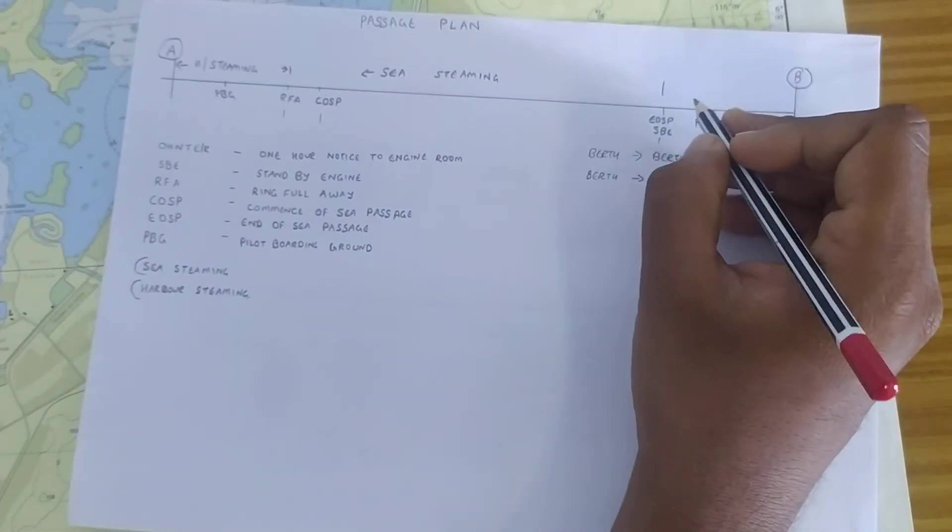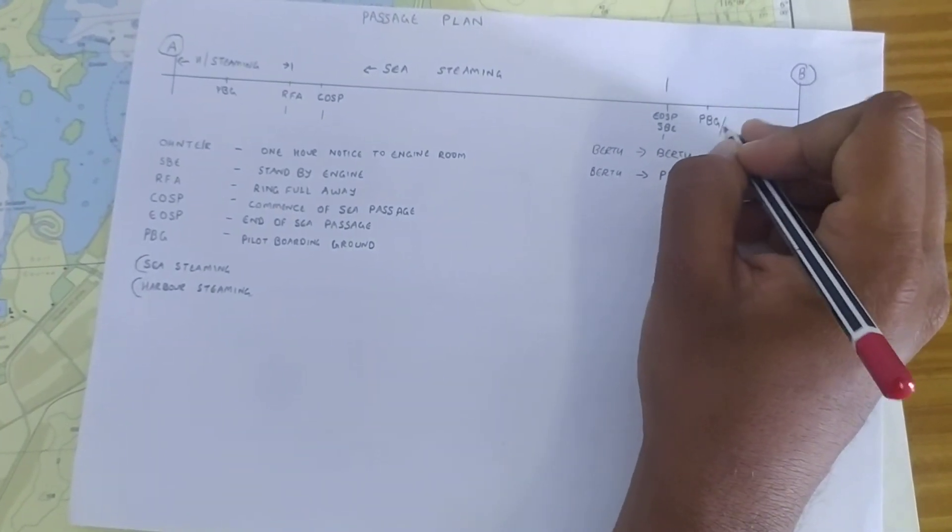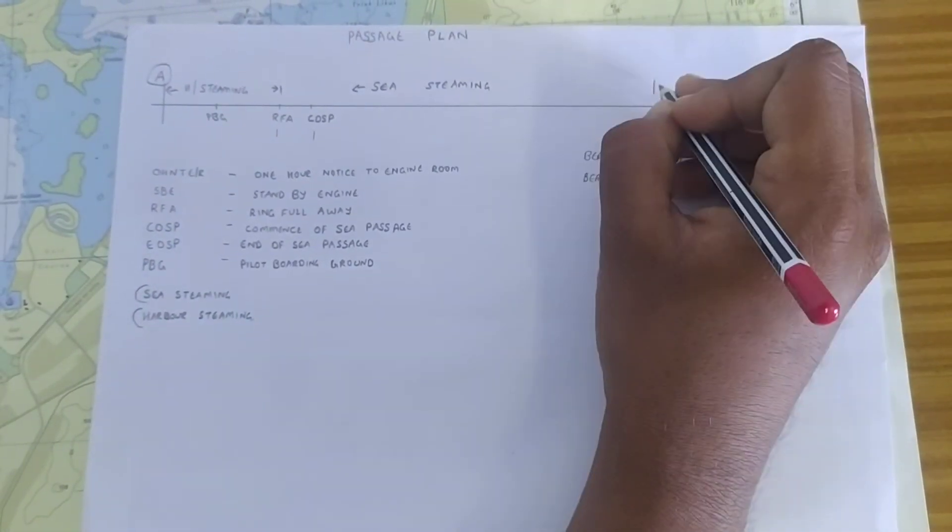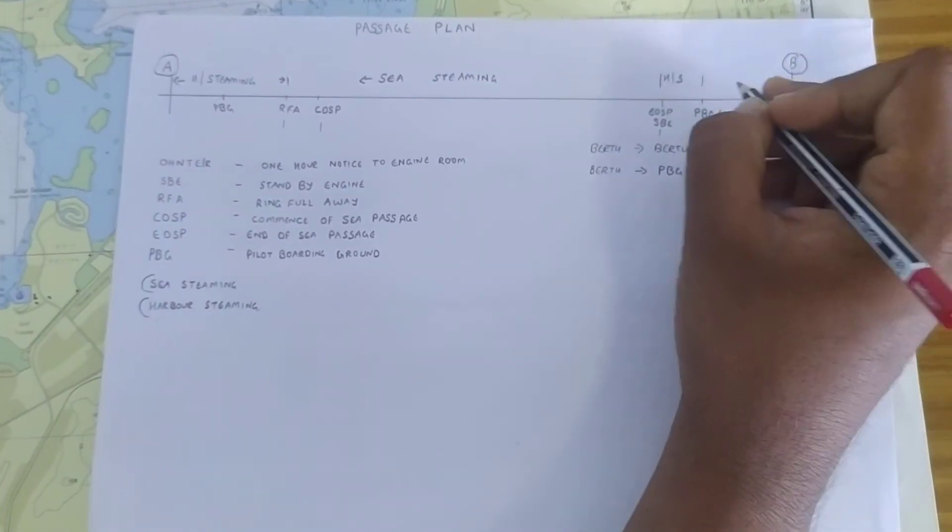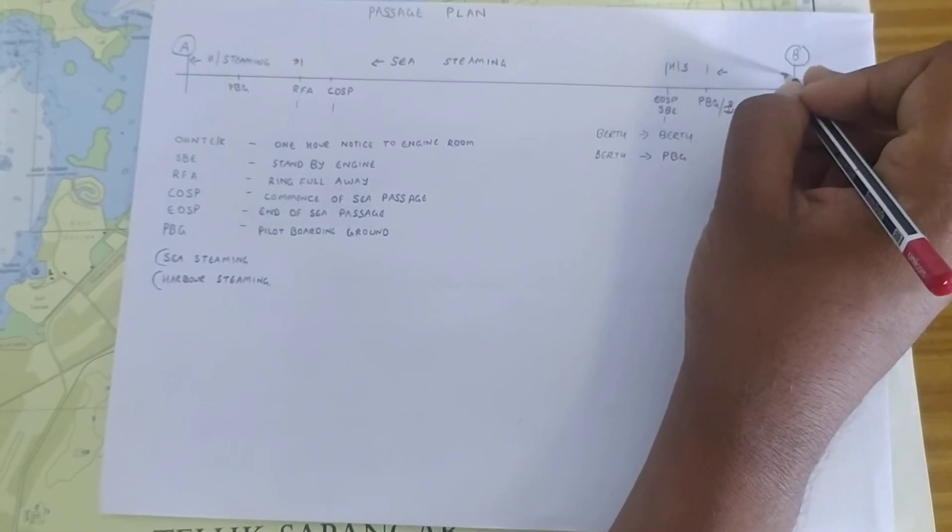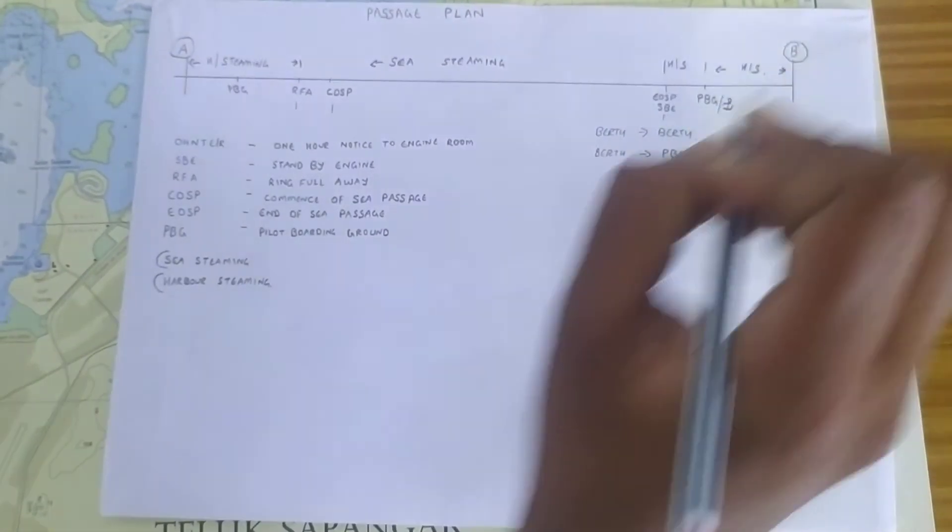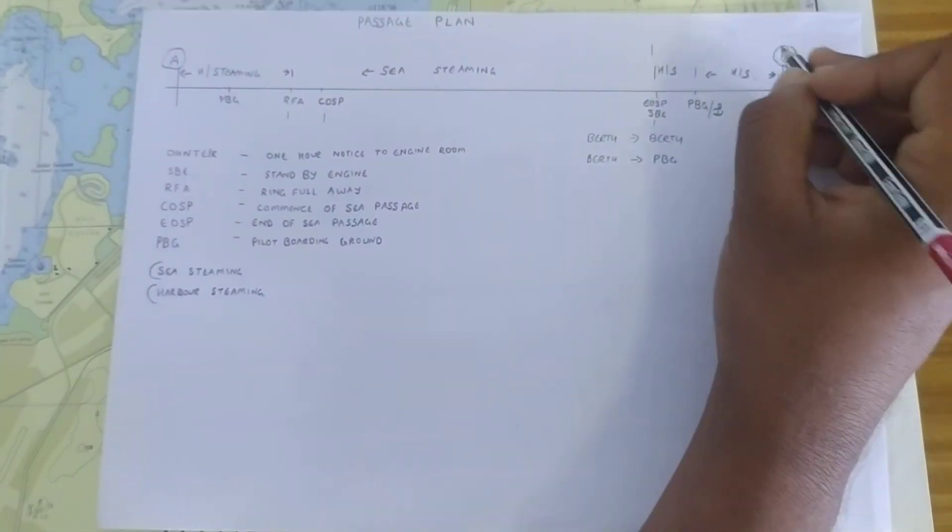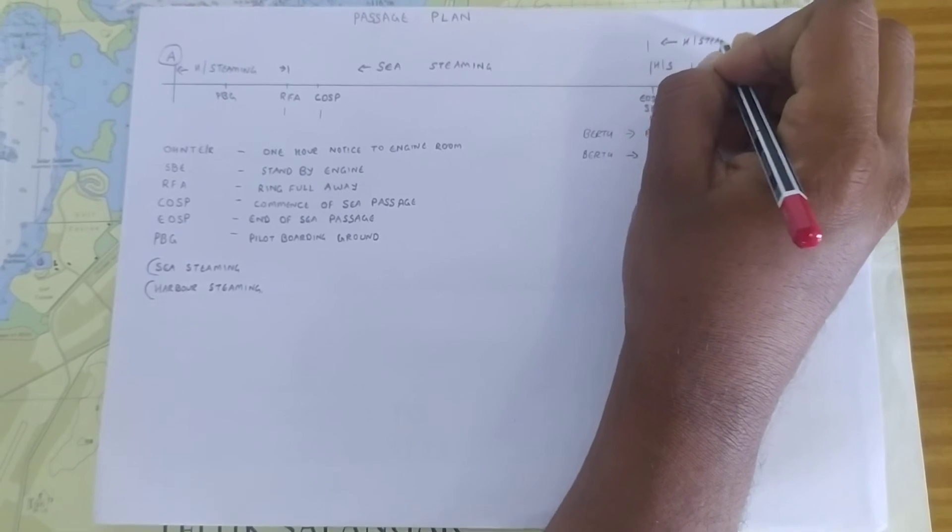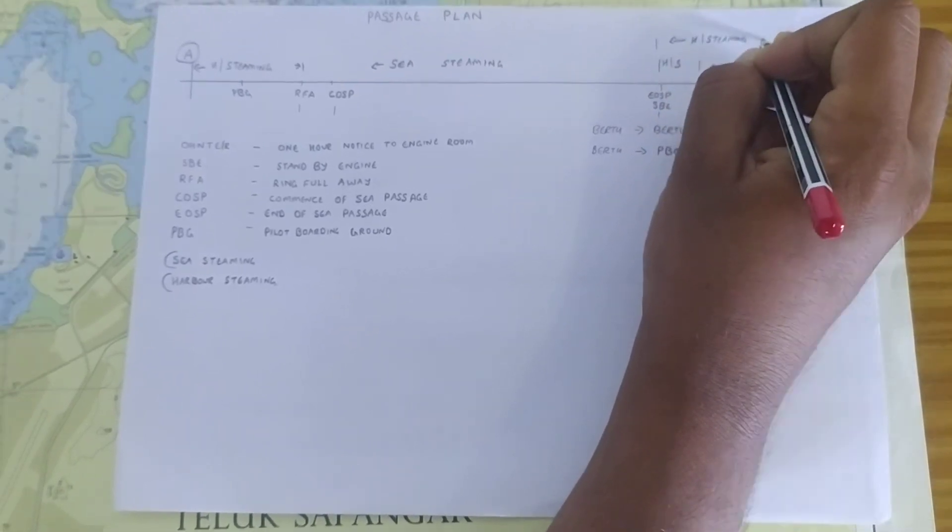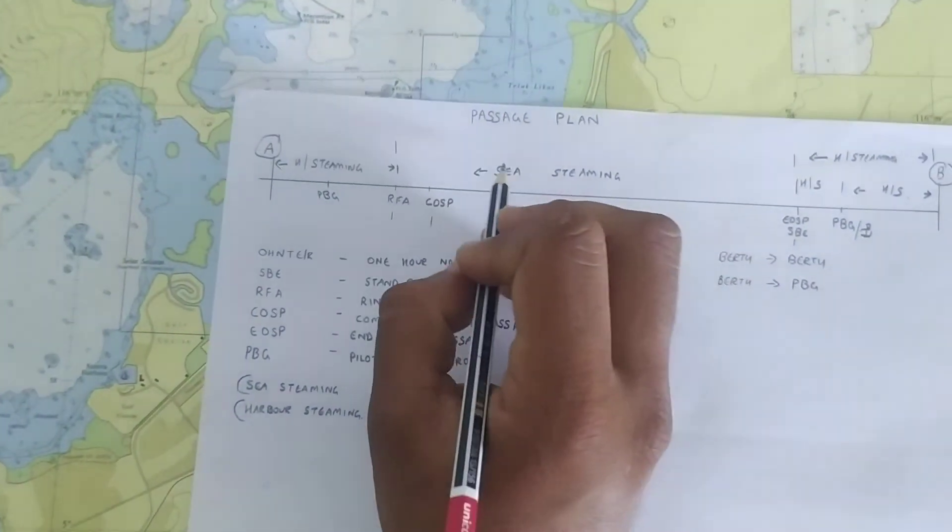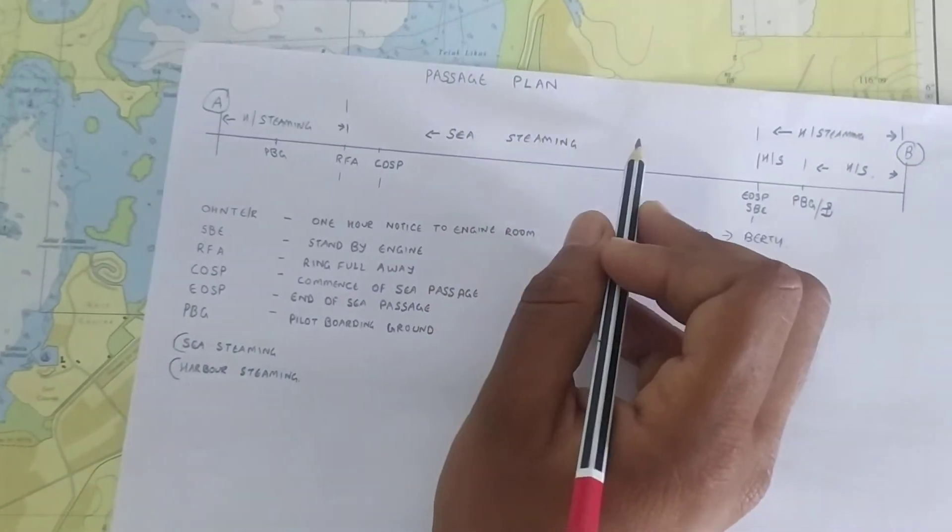From end of sea passage, you go to pilot boarding ground or anchor. This is again harbour steaming and from anchor back to your berth is also harbour steaming. This complete distance is harbour steaming and this distance is the sea steaming.